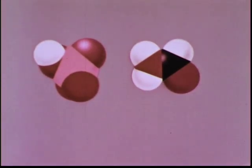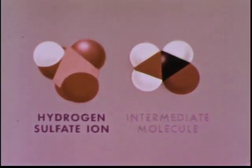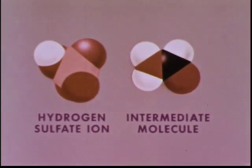By losing a proton, the sulfuric acid forms a hydrogen sulfate ion. The formic acid molecule, by accepting a proton, forms an intermediate molecule which will undergo further reaction.